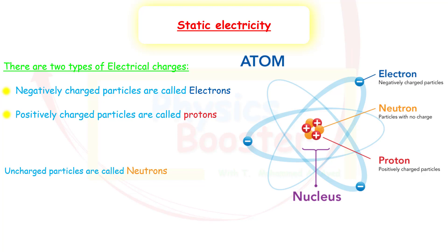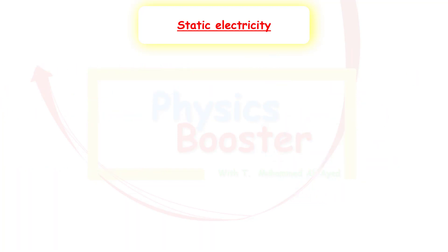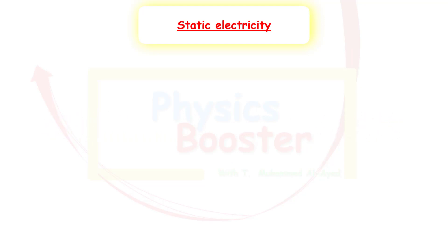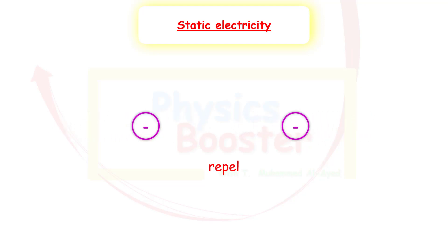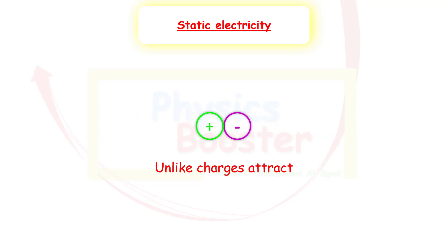What does this arrangement have to do with static electricity? We know that if we have two charges which are the same, they will repel. This happens for positive charges and also for negative charges — a negative charge near another negative charge, or a positive near a positive, will repel. But unlike charges will attract. Electrons move quickly around the nucleus, and their movement prevents them from being pulled into it.